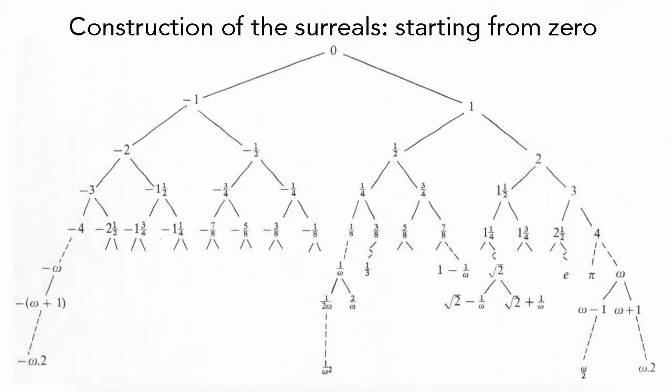Later on, some other surreal numbers can be constructed. Once we have omega, we can have omega minus 1 and omega plus 1, and also a whole host of other numbers, such as pi plus e. L consists of pi, R consists of pi plus 1, pi plus 1 half, pi plus 1 quarter, and so on. And some like root omega, where L consists of 1, 2, 3, and so on. While R contains omega, omega over 2, omega over 3, and so on.